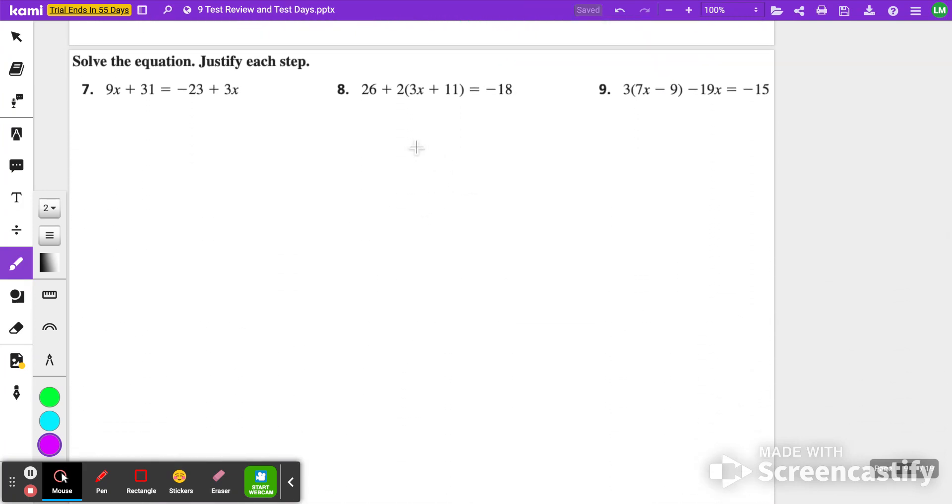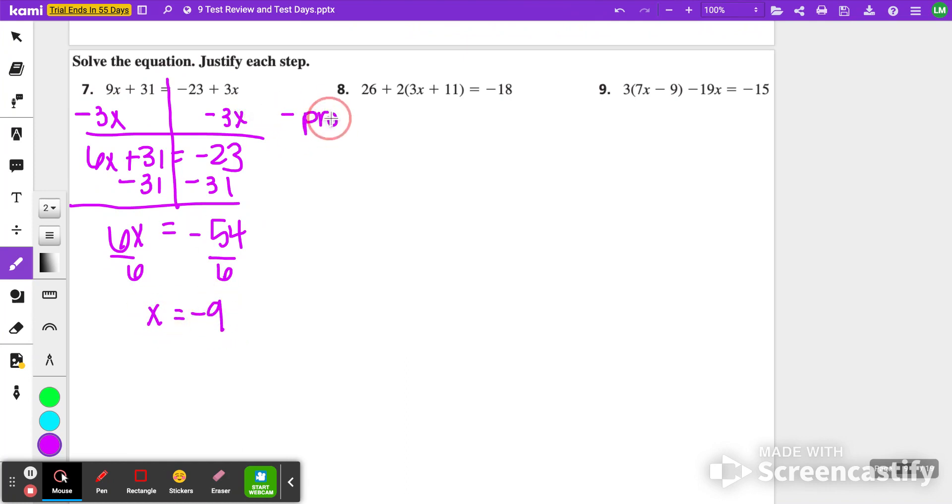For numbers seven and nine, we are going to solve the equation and justify each step. I'm going to solve the equations first, then we can go back and talk about our justifications. So we get 6x plus 31 equals negative 23. I am going to subtract 31 from both sides, so I get 6x equals negative 54. Divide by 6, x equals negative 9. The first thing I did was subtraction property of equality. To start, this was my given. Then I did the division property of equality, and then we simplified.